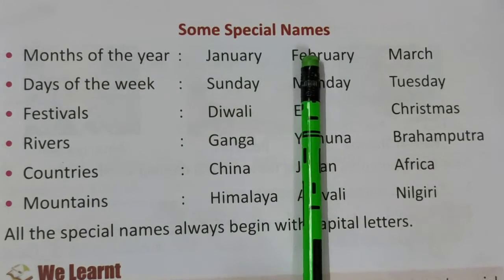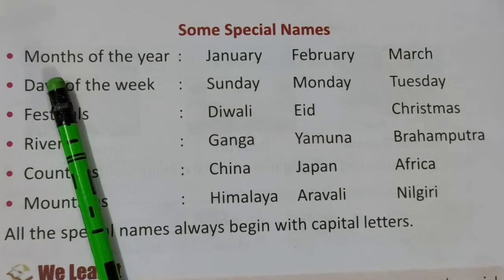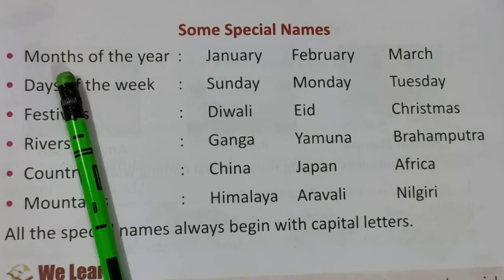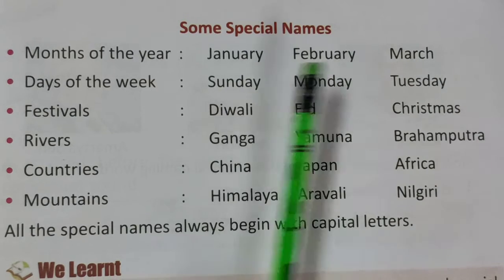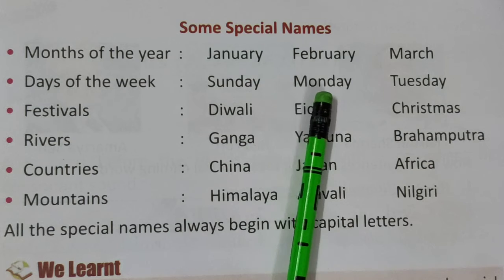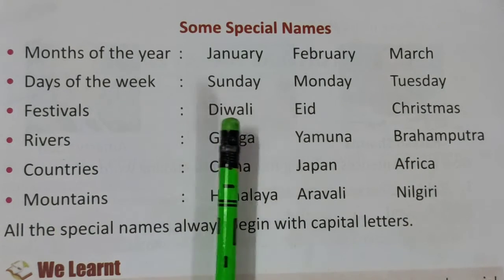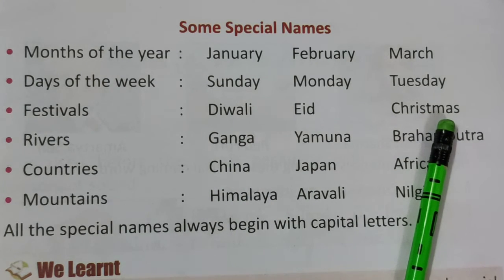Some more special names. Months of the year — saal ke jo mahinon ke naam hote hain, woh kya hote hain? Special names hote hain: January, February, March, April. Days of the week — saptaah ke din — Sunday, Monday, Tuesday — ye bhi special names hain. Festivals — Diwali, Eid, Christmas — in sare festivals ke bhi naam hain, isliye ye bhi special names hain.